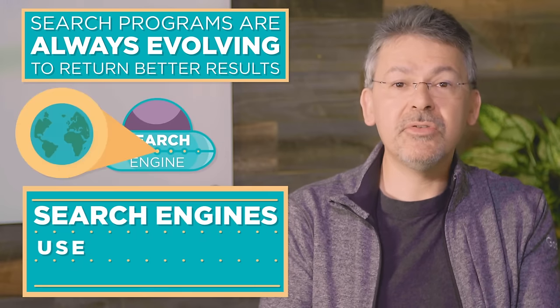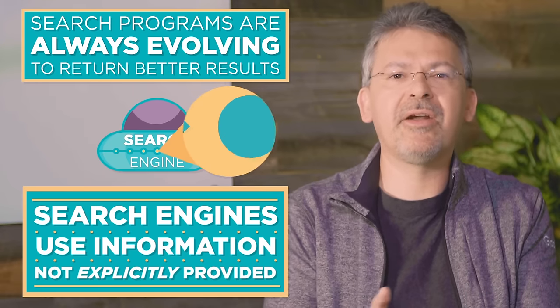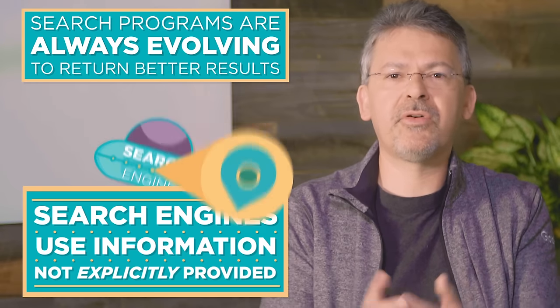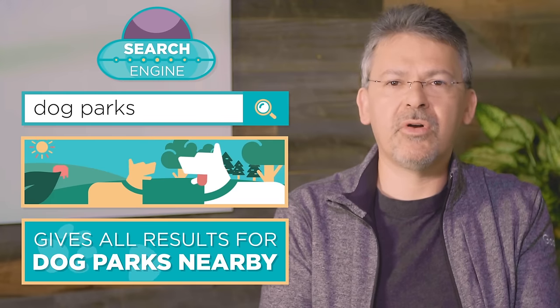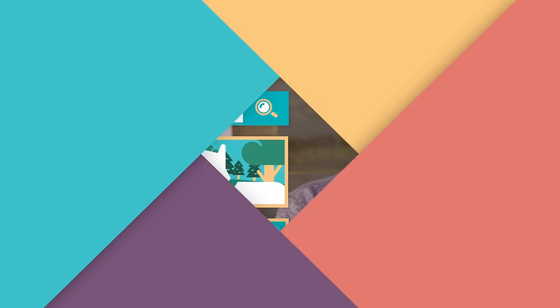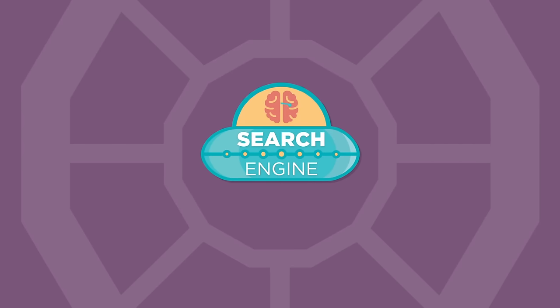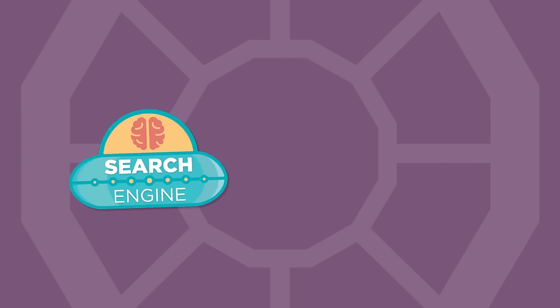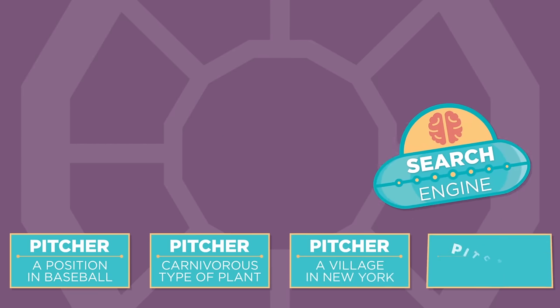Today's search engines even use information that you haven't explicitly provided to help you narrow down your search. For example, if you did a search for dog parks, many search engines would give you results for all the dog parks nearby, even though you didn't type in your location. Modern search engines also understand more than just the words on a page, but what they actually mean in order to find the best one that matches what you're looking for.